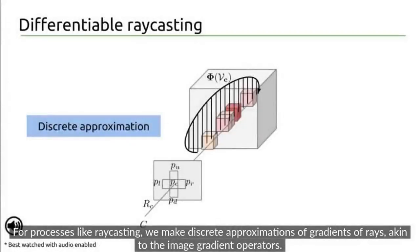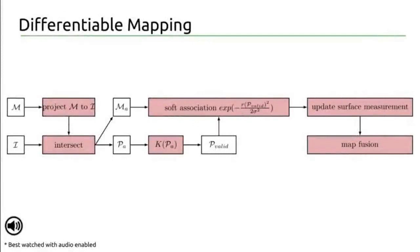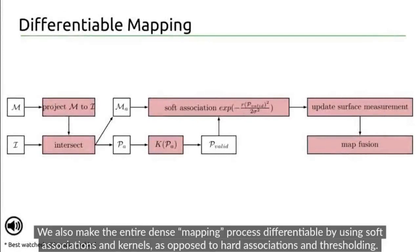For processes like ray casting, we make discrete approximations of gradients of phase, similar to image gradient operators. We also make the entire dense mapping process differentiable by using soft associations in kernels, as opposed to hard associations and thresholding.